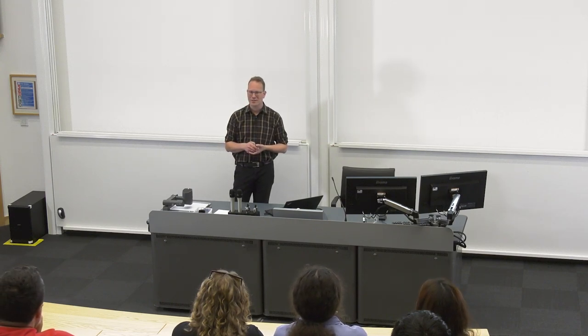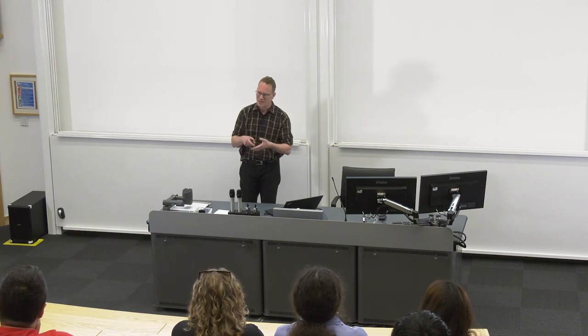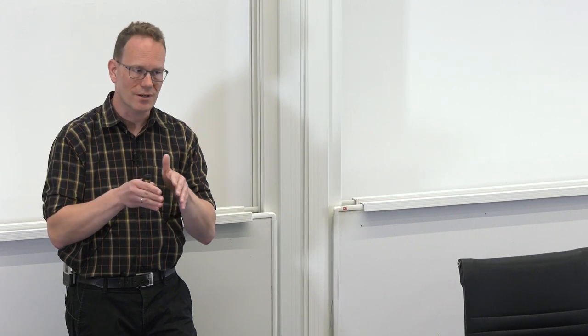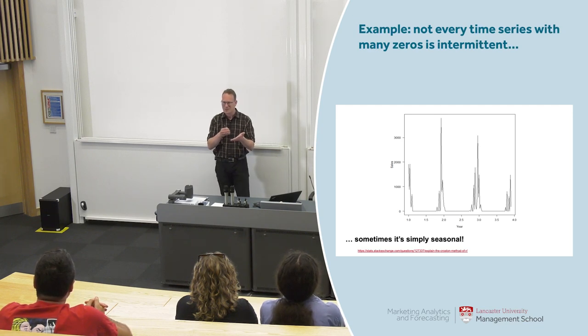As an example: there was once a thread on Cross Validated — a Q&A site for statistics — where somebody asked about understanding the Croston method, which is a specialized forecasting method for intermittent demands, meaning time series with lots of zeros and then occasional ones. I looked at that data and it turned out the time series was not intermittent in the sense of occasional random demand — it was seasonal, with clear seasonal peaks at certain points in the year and zero outside of that. Perhaps some kind of fresh produce with a season of only a few weeks. So it wasn't a question of understanding Croston for intermittent demands, but understanding how to fit a seasonal model to that data.